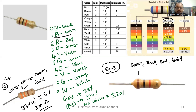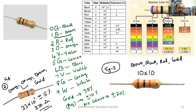The last band should be gold. Brown corresponds to code 1, black is 0. For the third digit, use the multiplier 10 to the power of the red code, which is 2. Gold is plus or minus 5%.